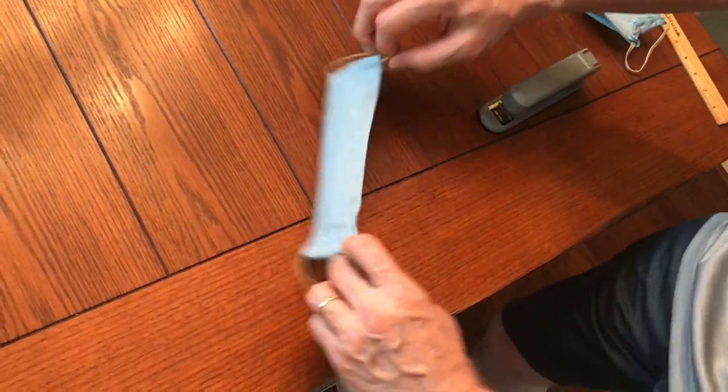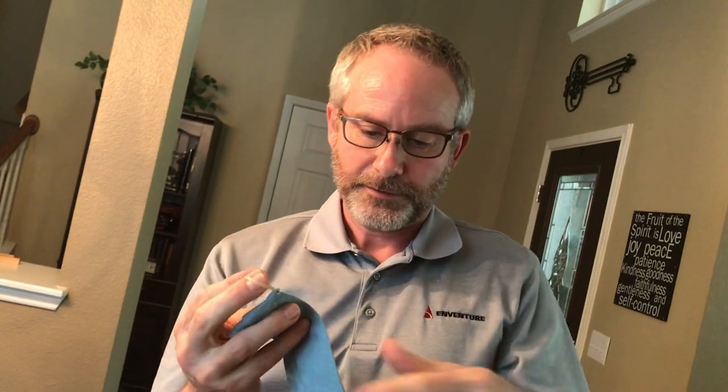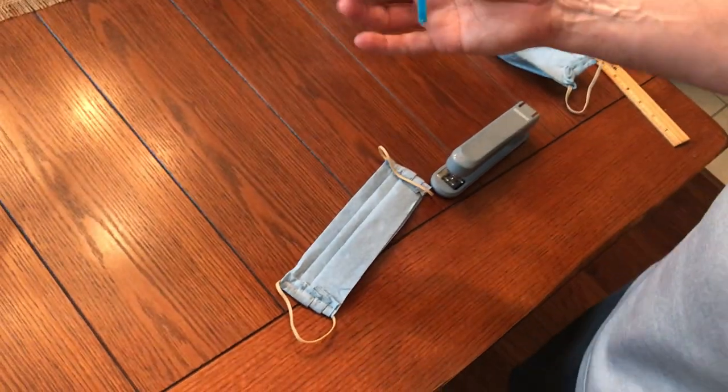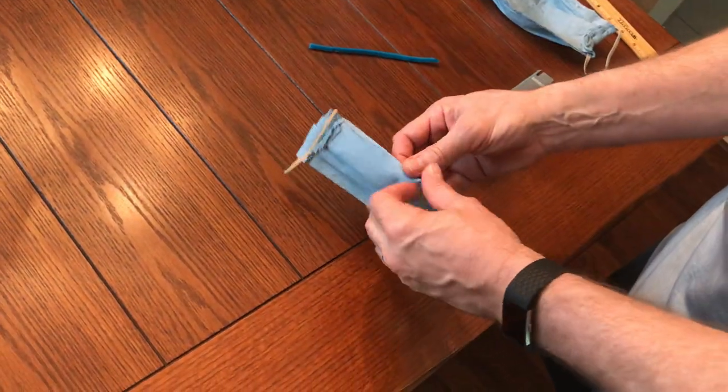And with the first pleat at the top, that would be all you need to do, just separate those out. If you want to make the nose piece, that's where you use the pipe cleaner. For that...